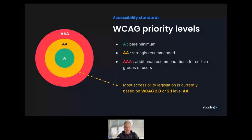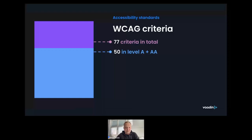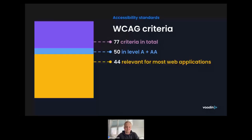The level you need to be most familiar with is Level AA, because the vast majority of accessibility legislation worldwide is based on WCAG 2.0 or 2.1 Level AA. WCAG 2.1 contains 77 criteria in total; Level AA including Level A contains 50 criteria. According to my own assessment, for the vast majority of web applications about 44 of those are relevant — the remaining six are mainly about audio and video content.